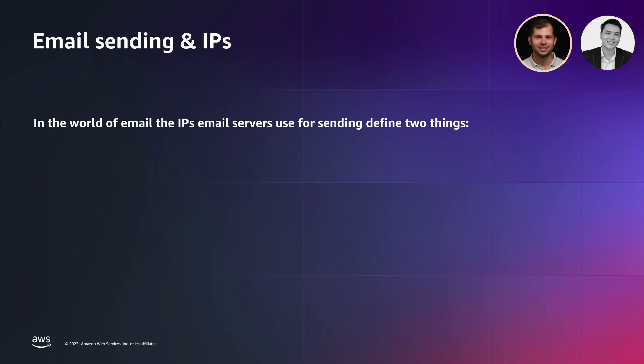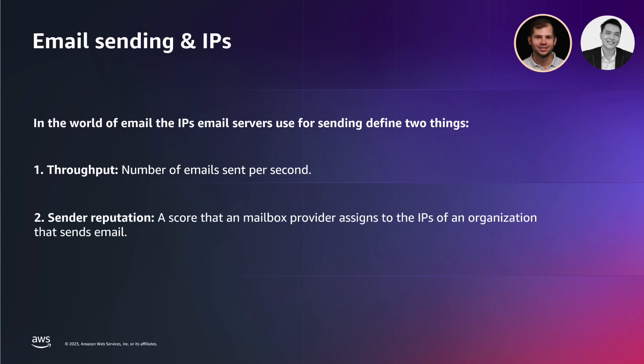IPs that email servers use for sending define two things. The first is throughput, which is the number of emails you can send per second. To put it into perspective, each IP has 40 transactions per second, which includes both emails sent or retried. The more dedicated IPs you have, the higher throughput you can achieve. The second point is email sender reputation, which is a score that a mailbox provider assigns to the IPs of an organization that sends email. A low sender reputation score can impact your deliverability and result in your emails ending up in the spam folder.